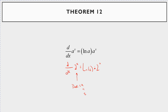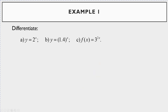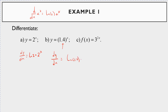Let's do a bunch of examples to get this formula down. For y = 2^x, dy/dx = ln(2)·2^x. Recall that d/dx of a^x = ln(a)·a^x. So for y = 1.4^x, the base is 1.4, so dy/dx = ln(1.4)·1.4^x.